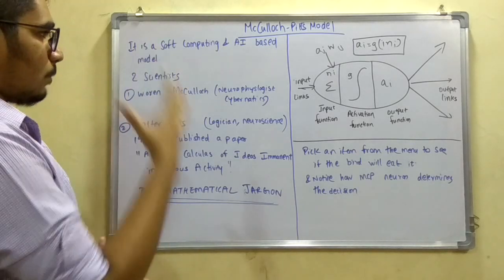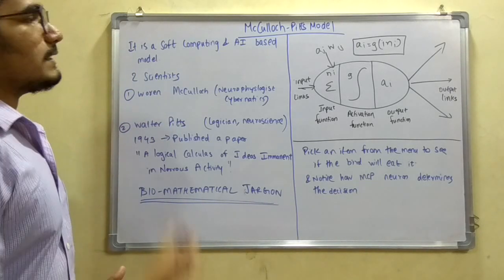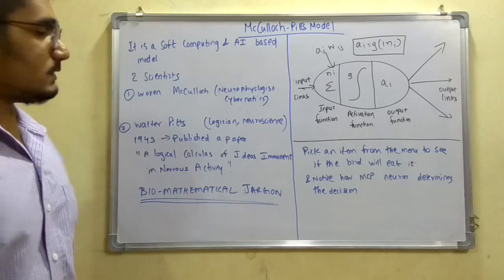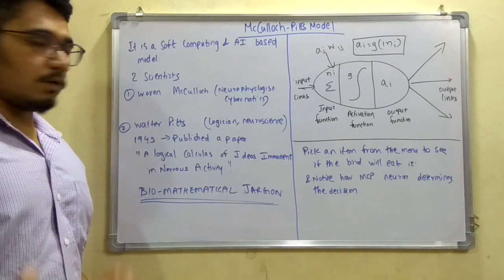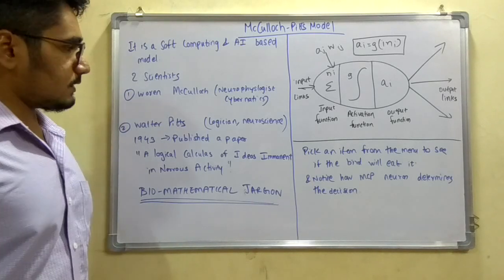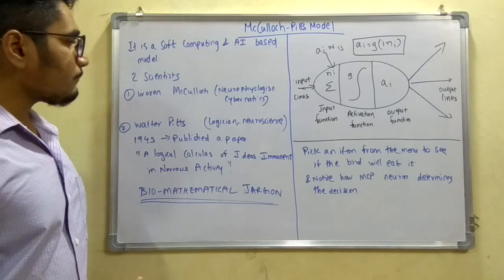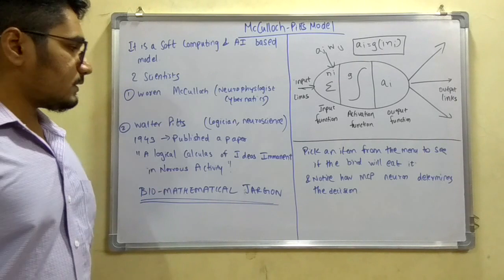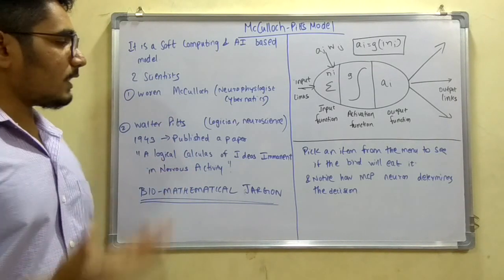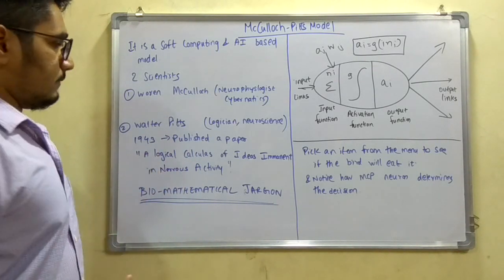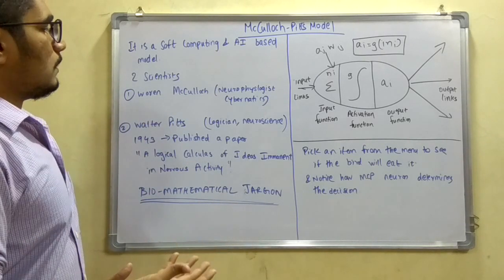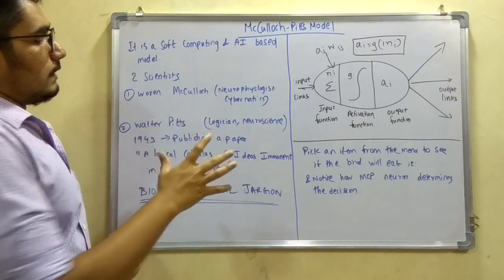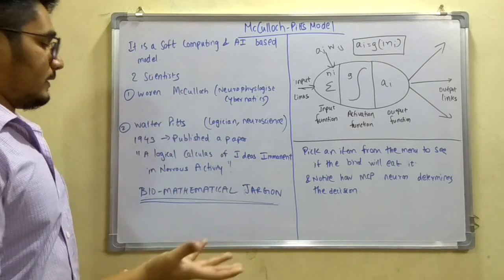Next, the basis of this origin: the McCulloch model was initially proposed by two scientists whose names were Warren McCulloch, who was a neurophysicist and cybernetician, and Walter Pitts, who was a logician scientist and neuroscience expert. These two scientists proposed this model called the McCulloch-Pitt model, based from their last names, that is McCulloch and Pitt.